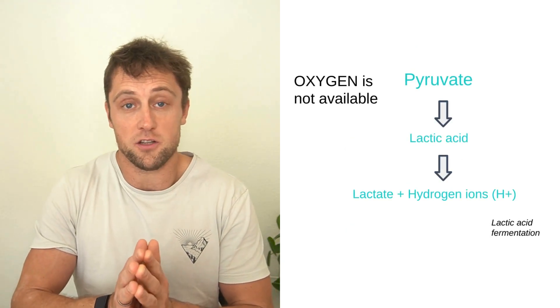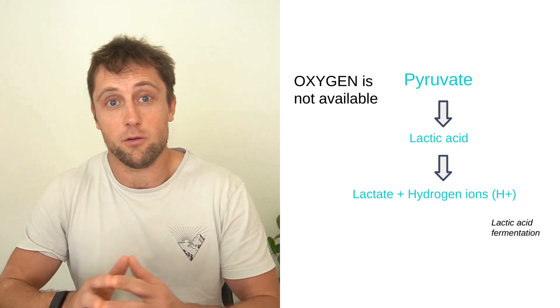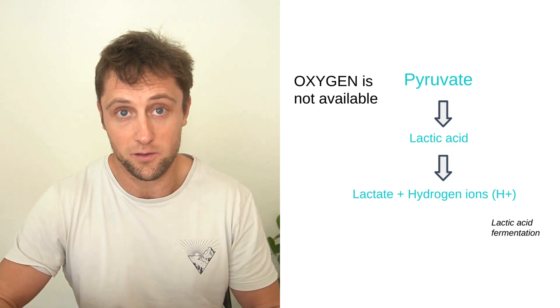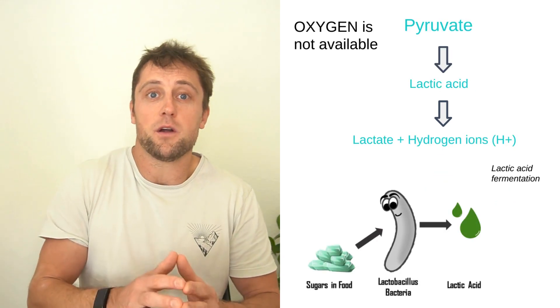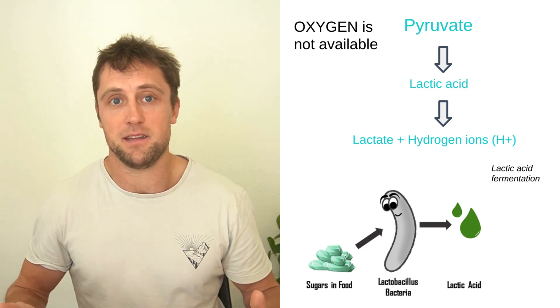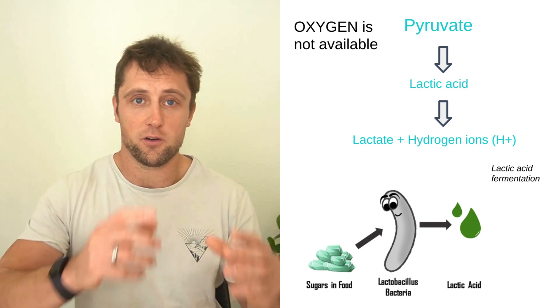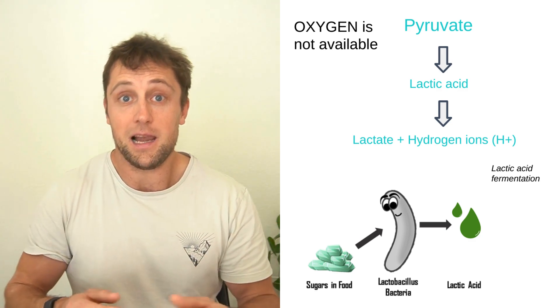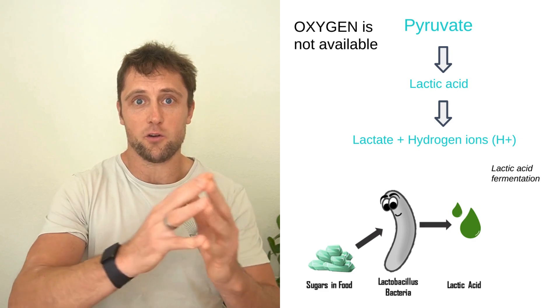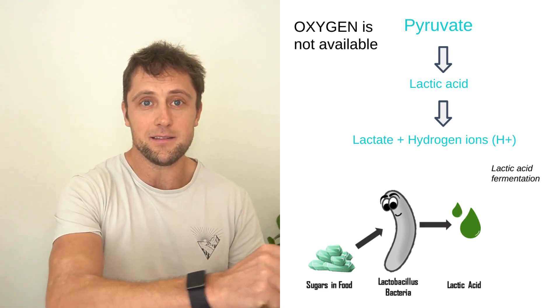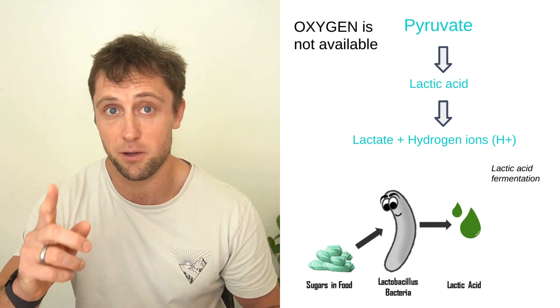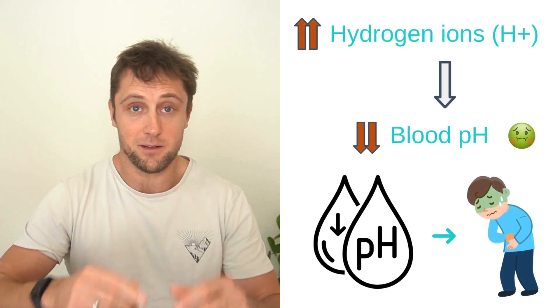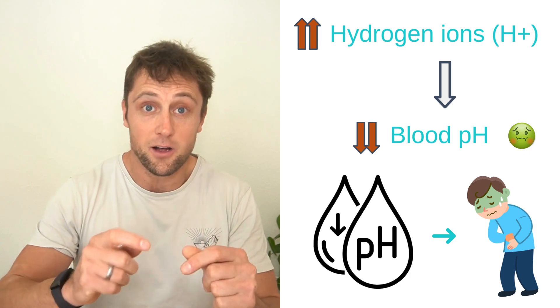Without oxygen, pyruvate turns into lactate and releases hydrogen ions H+, remember that one closely, a process that we call lactic acid fermentation. And it also involves oxidation of NADH to NAD+. Lactic acid is a weak acid. It quickly dissociates into lactate ions and hydrogen ions, these H+ ions. And this buildup of hydrogen ions is key because it can decrease the muscle and also the blood pH, leading to that sick feeling after a sprint.